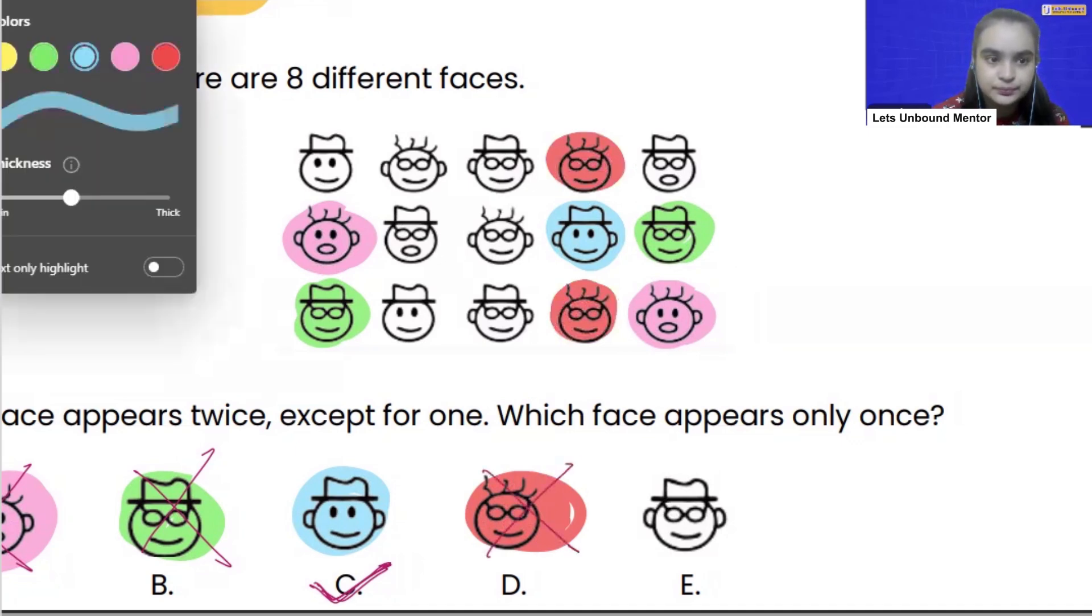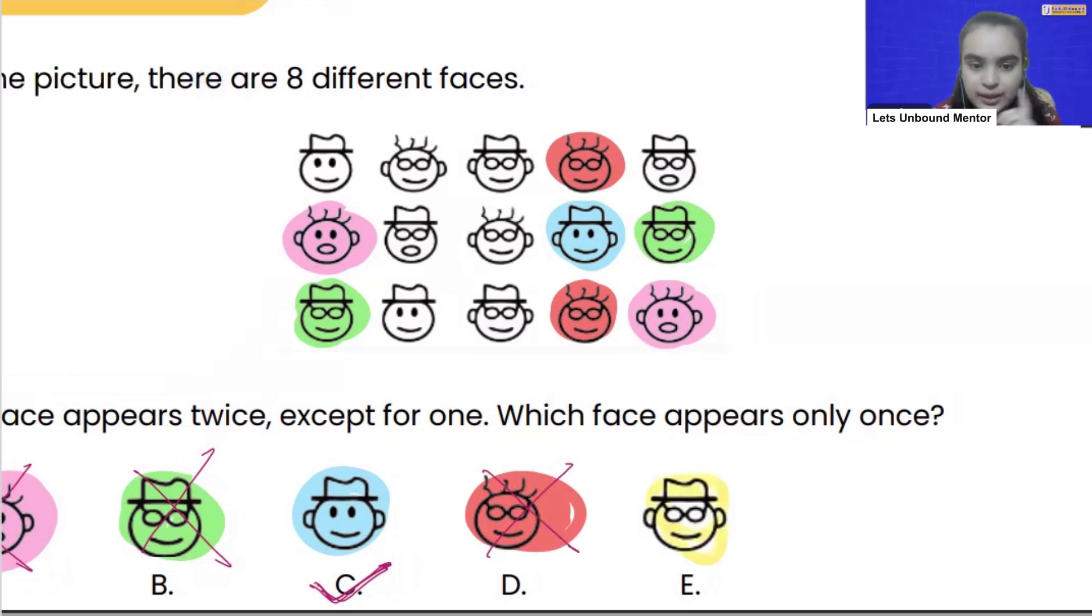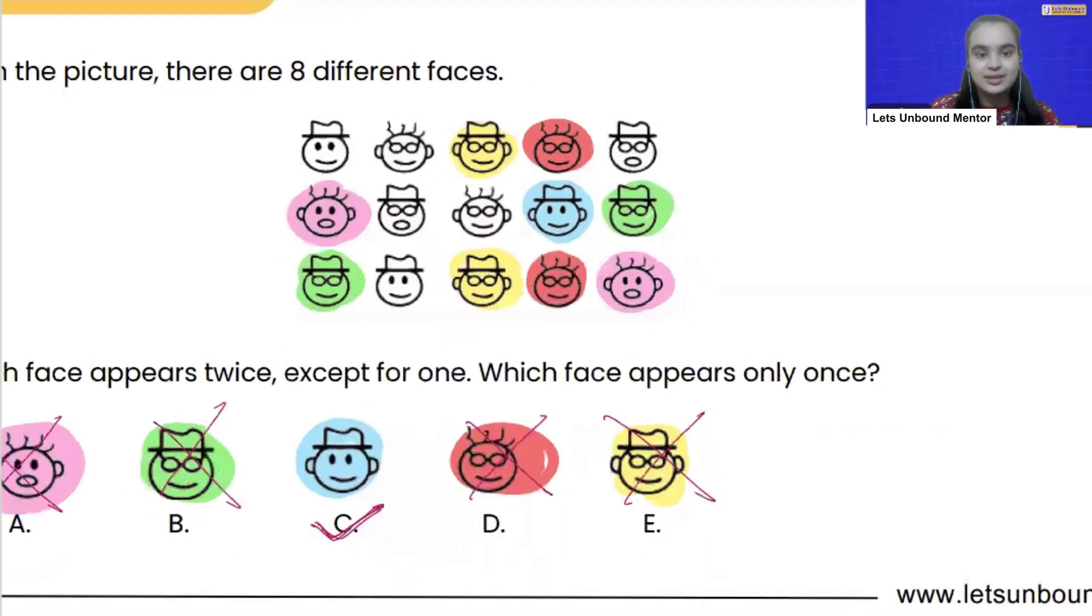I show you the fifth one, we are having it here, correct? And we are having it here. So that is also not a correct answer. So yes, we got our answer, that is